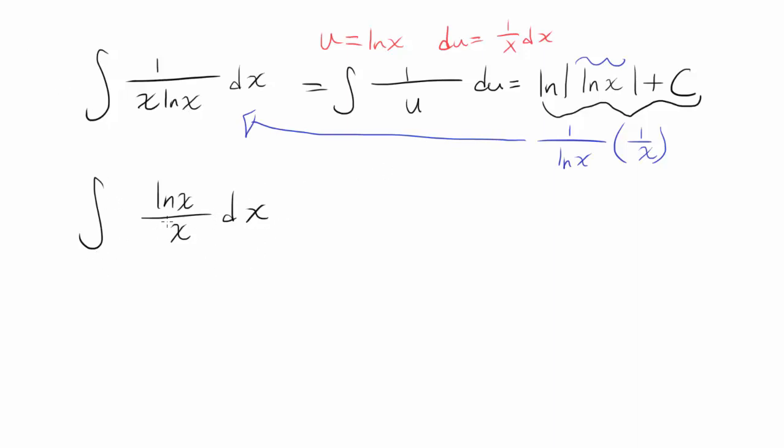Now let's try the second one. Integral of natural log of x over x dx. Let's try the same technique. Let's let u be natural log of x. du is going to be 1 over x dx. And in this case we have u up top and you have du.